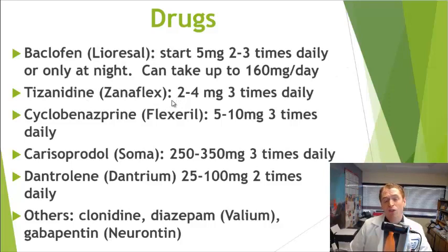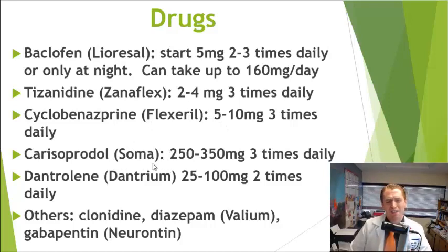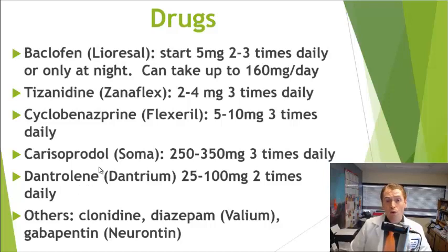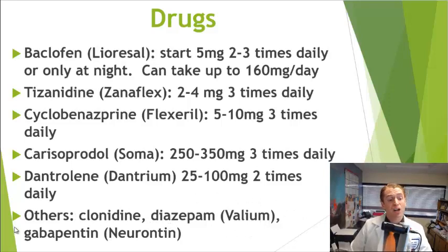Tizanidine (Zanaflex) is also used, though it can cause QT prolongation and has drug-drug interactions. Flexeril can be effective but is quite sedating. Soma is effective but no longer really used due to cases of delirium and confusion, and there are several deaths linked to it — particularly when combined with opioids. Dantrolene is normally given intravenously as a paralytic during anesthesia but can be used orally for spasticity, though it can cause liver failure at higher doses, so it's not first-line. Some people have tried clonidine (a blood pressure medication) or Valium, which can be addictive. When spasticity occurs with nerve pain, gabapentin can sometimes be effective.